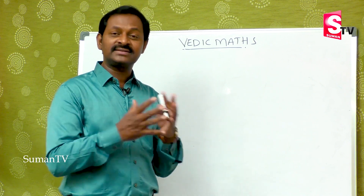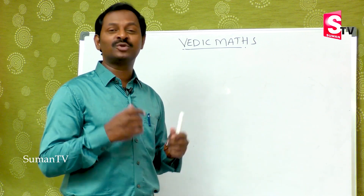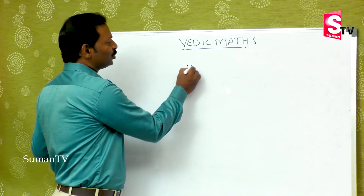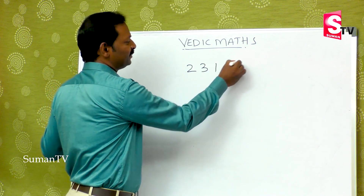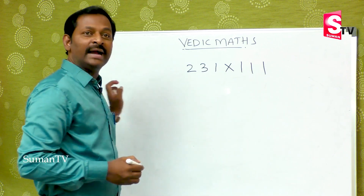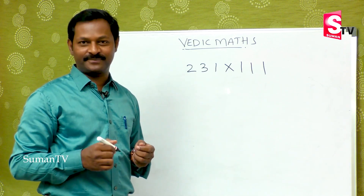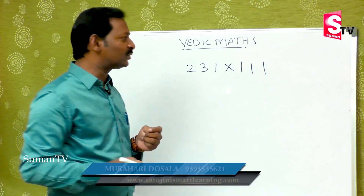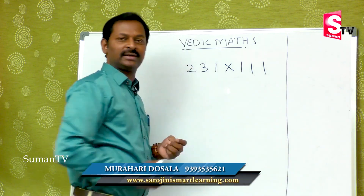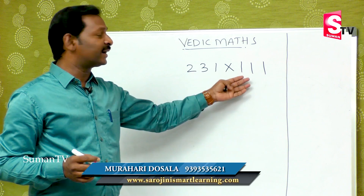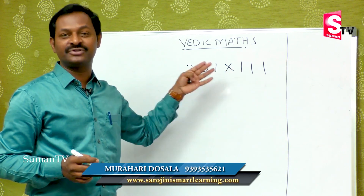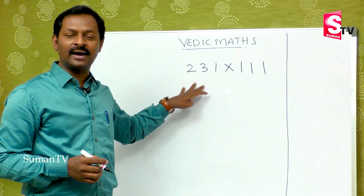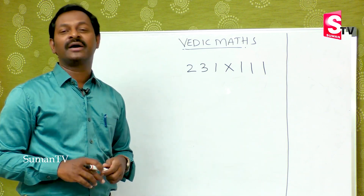In the last class, we learned the 11th method. Today, we will do 111 — a 3-digit number. In the regular method, we have to do 3 steps, but here, just one step will cover this.